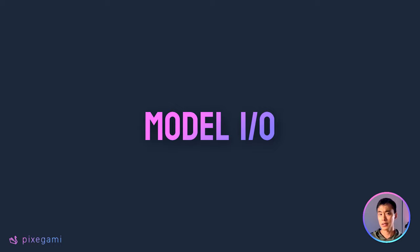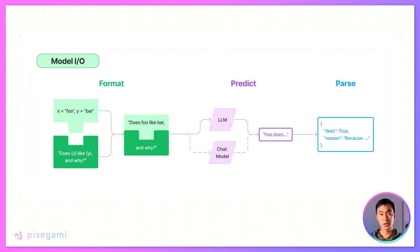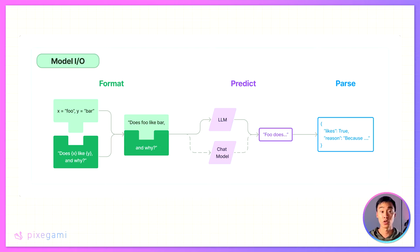Once everything's installed, you're ready to start using Langchain. But first, let's take a quick look at how it all works. You can think of Langchain as a sort of wrapper around LLMs. It abstracts away the implementation details and gives us a more useful way to interact with it. Usually, the first step to interacting with an LLM is the prompt. Langchain gives us a way to format a prompt with variables.